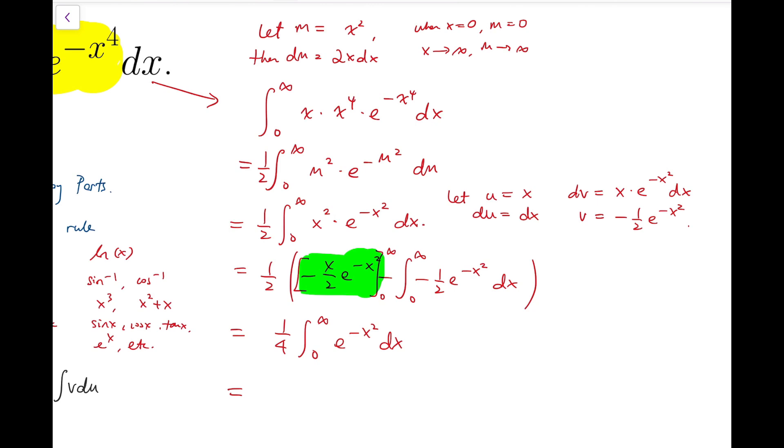And in fact, I can further rewrite that as 1 over 8 times the integral, this time not from 0 to infinity but from minus infinity to positive infinity of e to the minus x squared dx, because e to the minus x squared is an even function. So now what remains is to evaluate this integral.